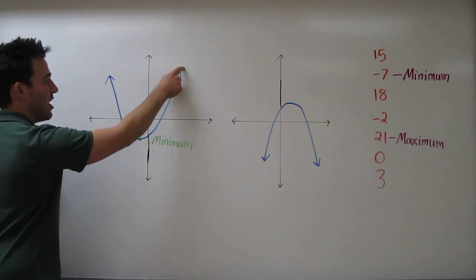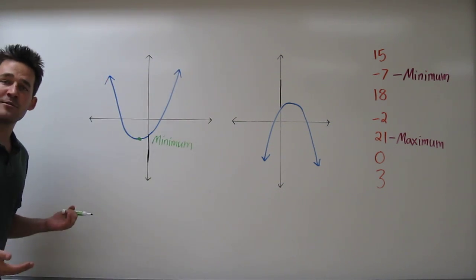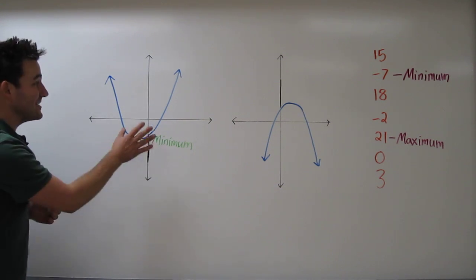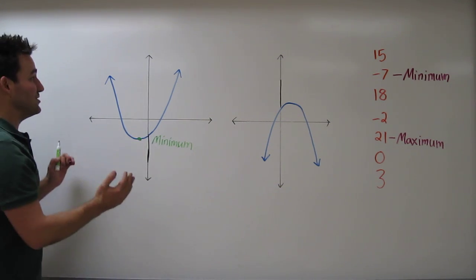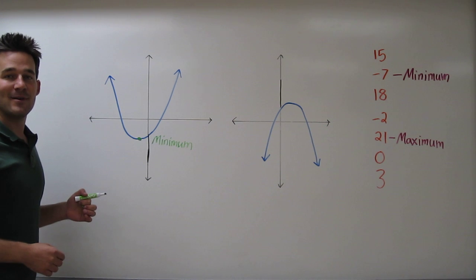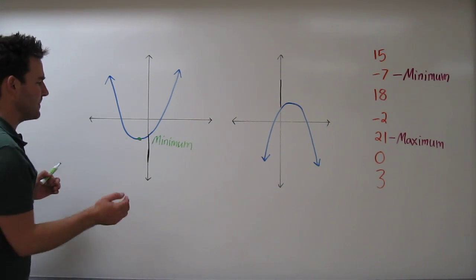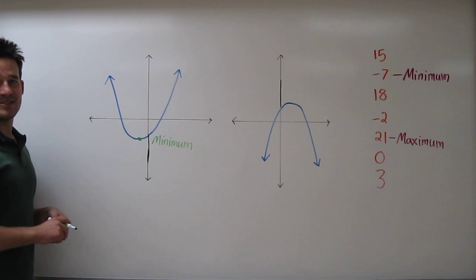I mean, I see it's really tall up here, but I also know those arrows indicate that it keeps going up. So actually, this has no maximum. It just keeps going up and up. It's difficult for us to find the greatest number because it keeps going. But I am sure that this is the minimum.